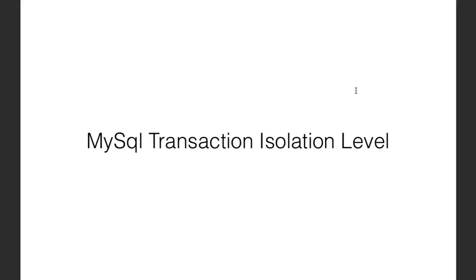In this video we will learn about isolation levels in transactions. Ever wondered what will happen if two transactions are running concurrently in a database, operating on the same set of records at the same time? The answer lies in what level of isolation your database supports. Isolation level helps us determine how two transactions would behave when run concurrently.